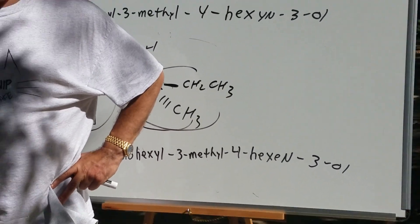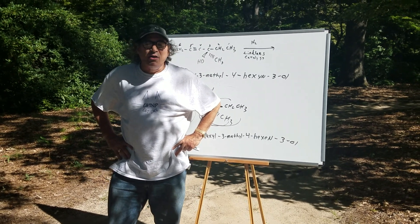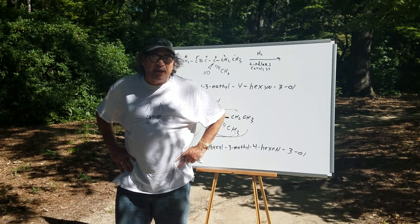You should be able to hit a question like that. And understand that Lin-Law's catalyst gives the Z-alkene, where if it was sodium and liquid ammonia, it would have gave the E-isomer.